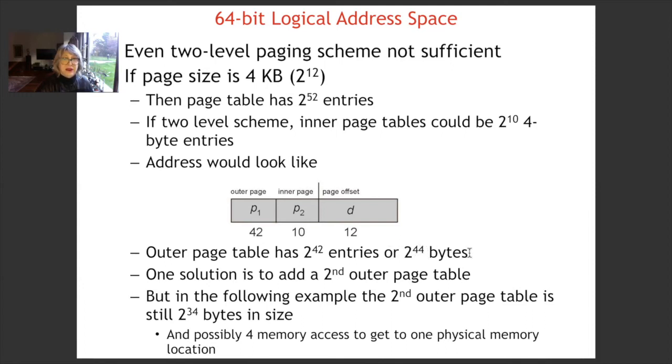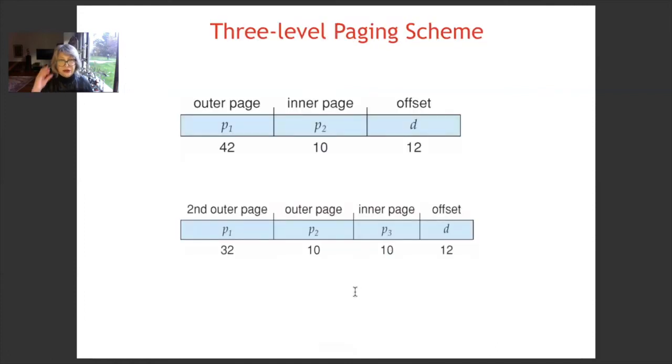One solution is to add a second outer page table. But, in the following example, the second outer page table is still 2 to the power 34 bytes in size. And, possibly, 4 memory accesses to get one physical memory location will be needed.